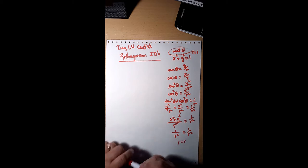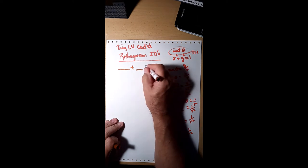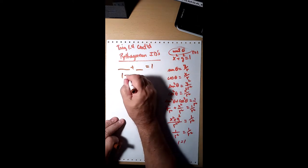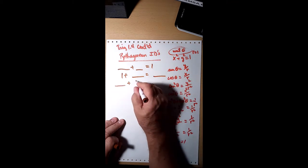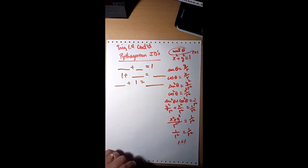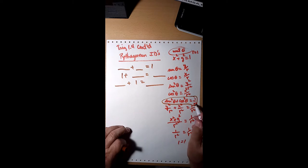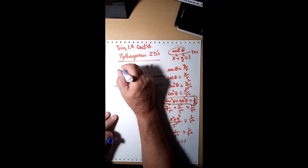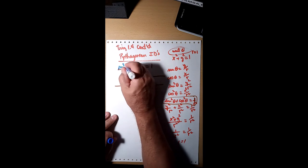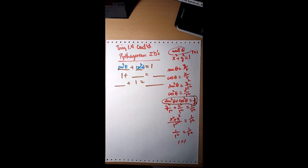So the Pythagorean identities follow a pattern: something plus something equals 1, then 1 plus something equals something else, and something plus 1 equals something else. The first one is sine²θ + cos²θ = 1. It has to be sine squared and cosine squared, not just sine and cosine.